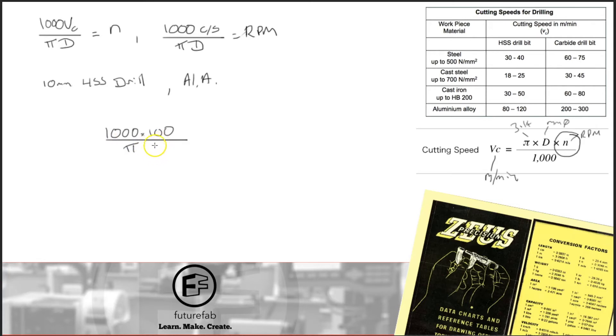Now, D is the diameter of the cutter. And that's going to be 10 mil in this case. If we didn't have this 1000 here, then we would have to convert that to meters. So let's do some cancelling. So that's just going to be there. So we'll have 10,000 divided by Pi is equal to 3,183 RPM.